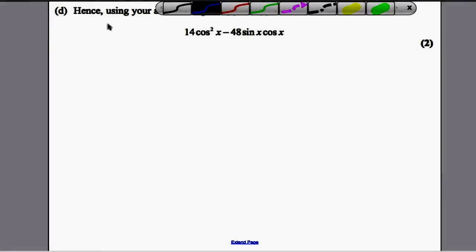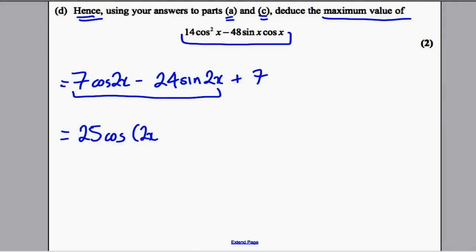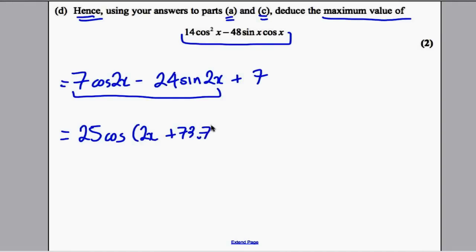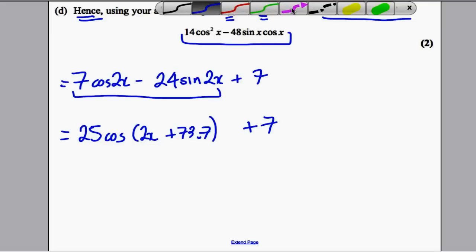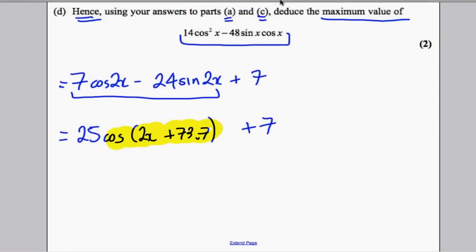The last part: Hence, using the answers to parts A and C, deduce the maximum value of 14cos²x - 48sinxcosx. We've shown this can be written as 7cos2x - 24sin2x + 7. From part A, that equals 25cos(2x + 73.7) + 7. The maximum cos can be is 1, so the maximum this could be is 25 + 7. Therefore, the maximum is 32. You're done for 2 marks.